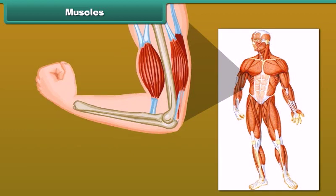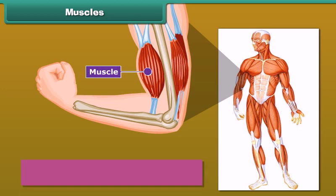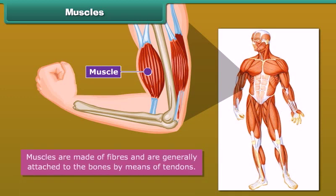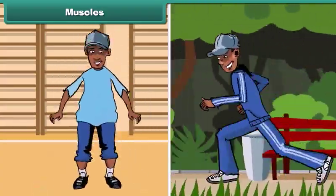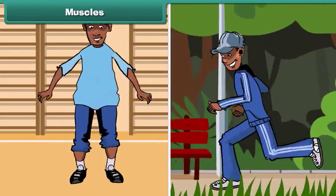Friends, make a tight fist and bend your arm at the elbow. Feel your upper arm — it feels harder. This is called the biceps. The biceps are muscles. There are about 600 muscles present in an adult human body. Muscles are made of fibers and are generally attached to the bones by means of tendons. Muscles along with bones help to give shape to the body and help the different parts of the body to make movements.